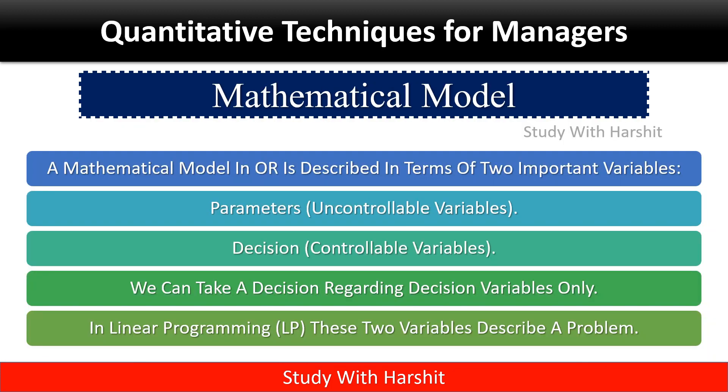Mathematical Model: A mathematical model in OR is described in terms of two important variables — Parameter and Decision. The parameter is an uncontrollable variable, while the decision is a controllable variable. We can take a decision regarding decision variables only. In Linear Programming (LP), these two variables describe a problem.